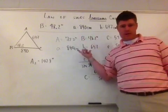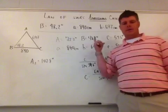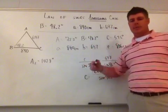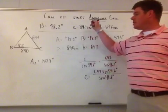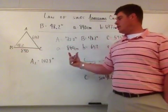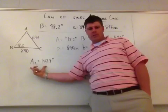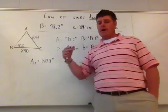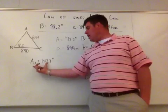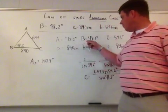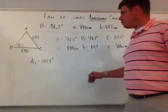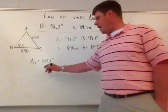That's the first triangle solved. If this weren't the ambiguous case — say, angle-angle-side — I'd be done. But since the original triangle was side-side-angle, I need to check the second angle A2 of 107.8 degrees. The given information still applies: side a is still 890, angle B is still 48.2 degrees, and side b is still 697.